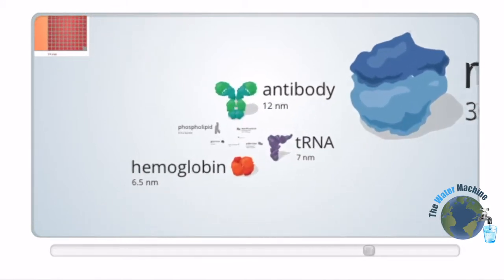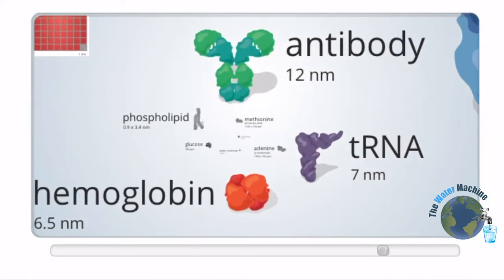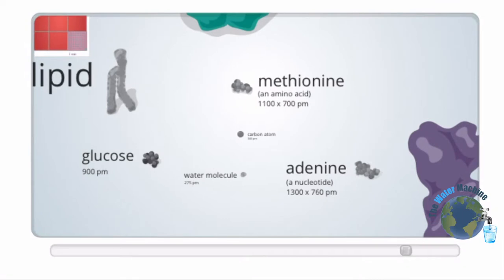Now we are at the size of a hemoglobin, which is protein responsible for transporting oxygen in the blood. And then glucose, a simple sugar that's an important energy source at the cellular level.